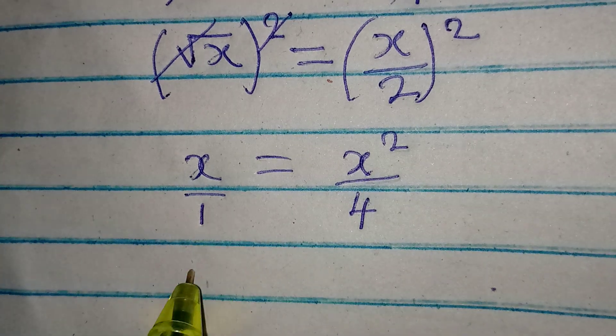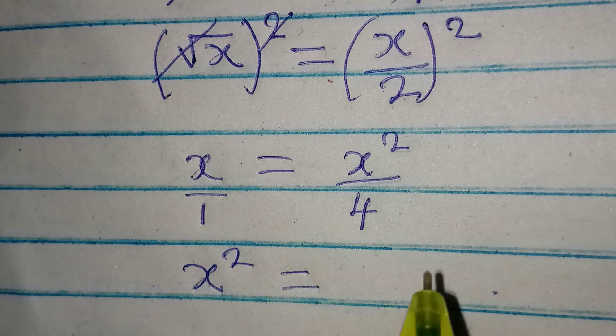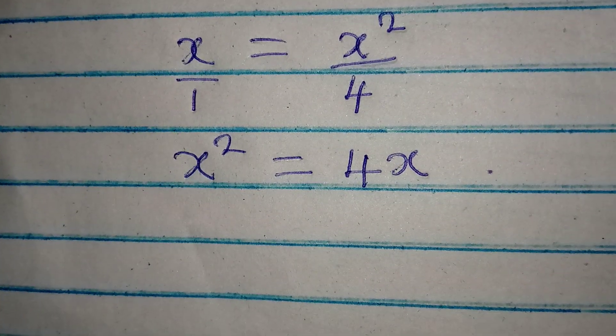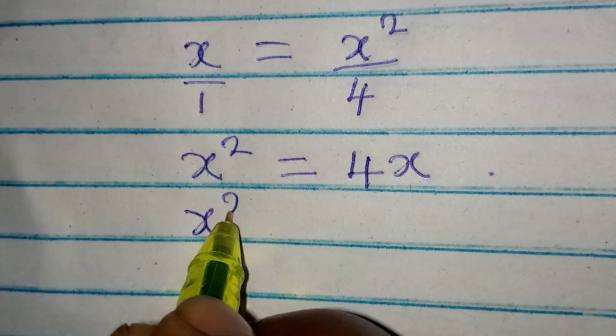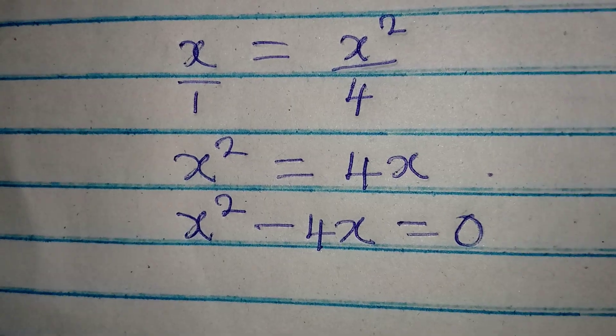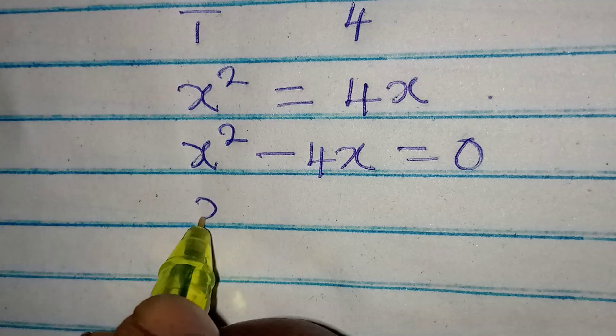So x squared times 1 will give x squared, and this is equal to x times 4, and that is 4x. From here, x squared minus 4x equals 0.